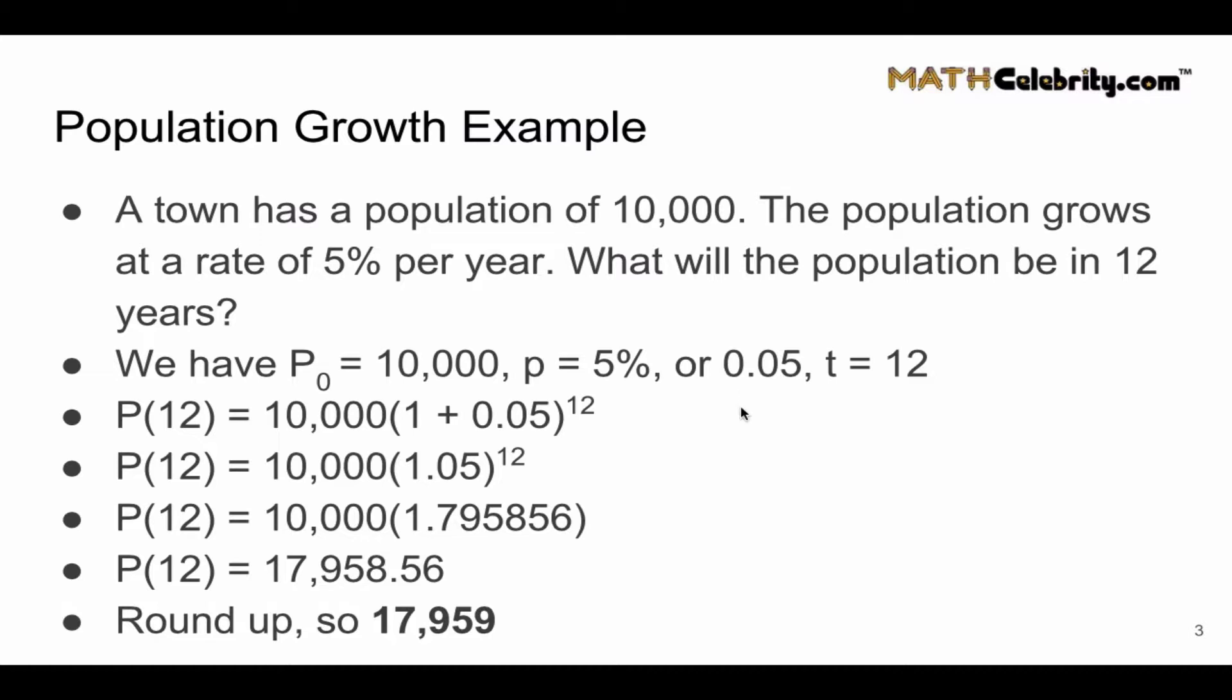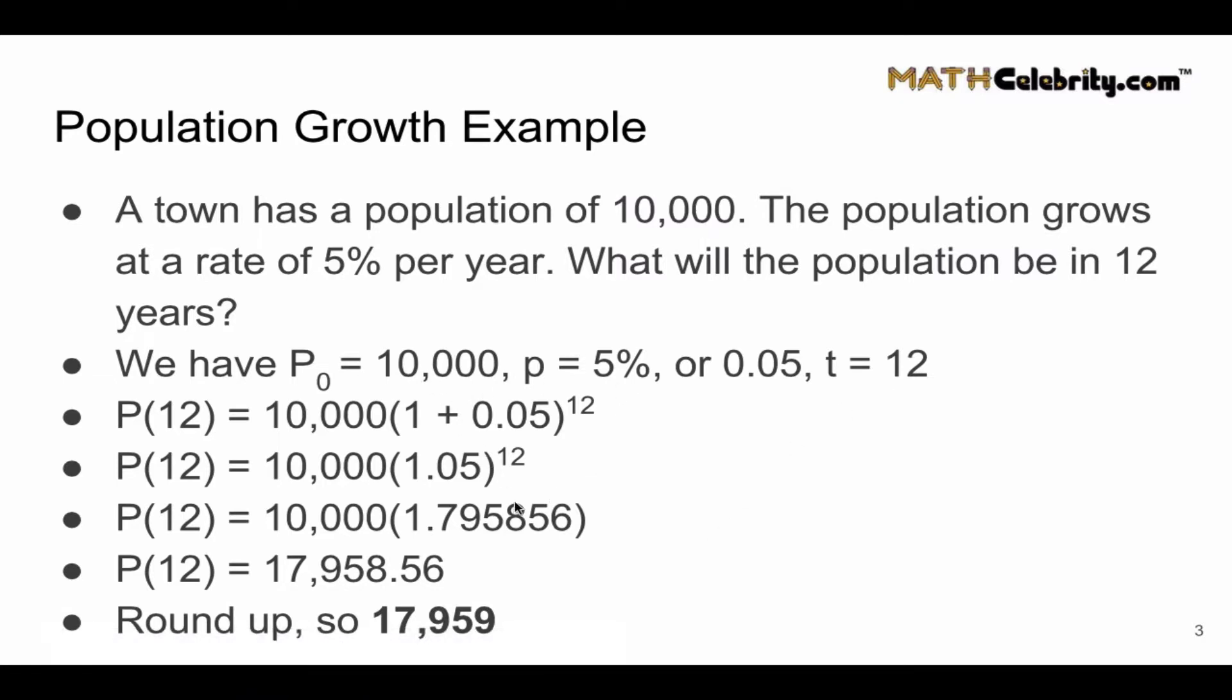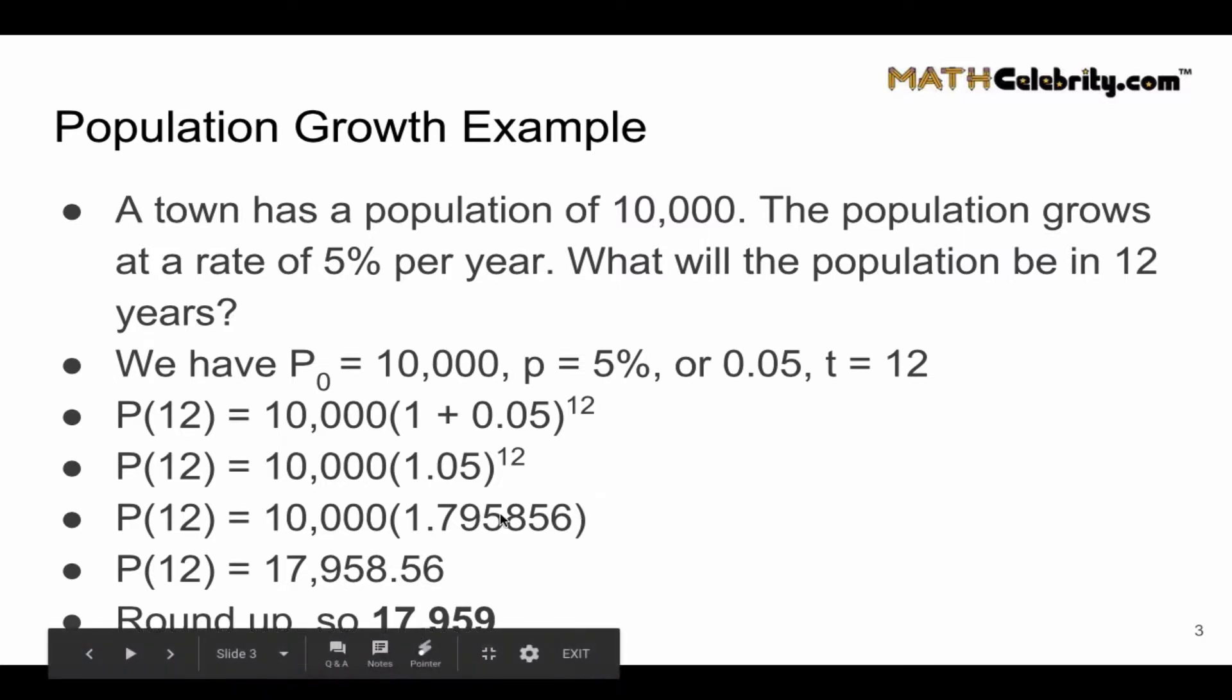So to recap, you're given three pieces of the population growth formula you want to solve for the last one. And so you take your percentage, make it a decimal, add 1, raise it to T, and multiply by your initial population. And it gives you your future population. This is your growth factor.